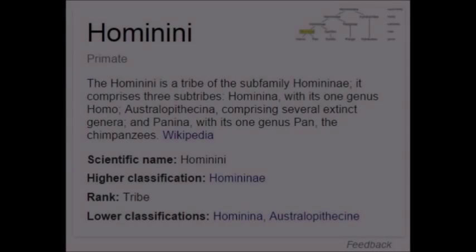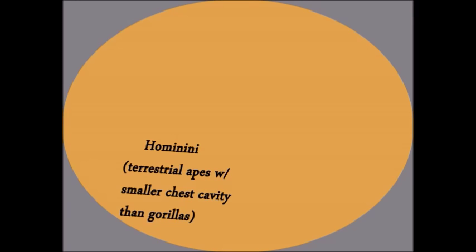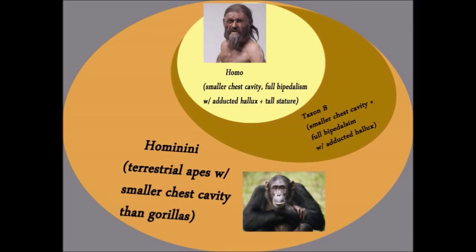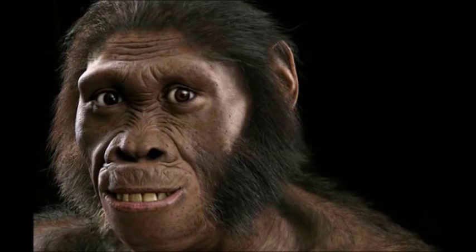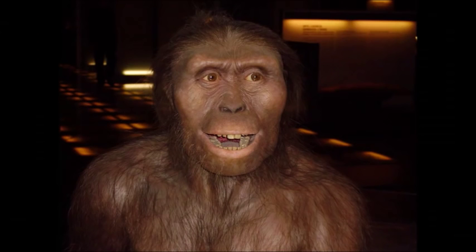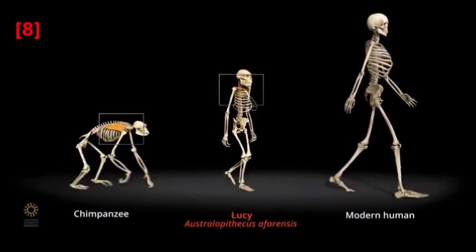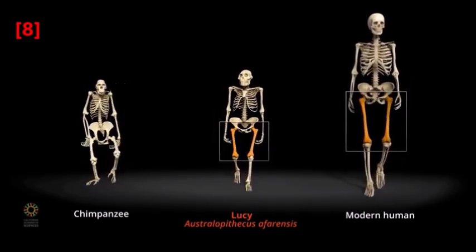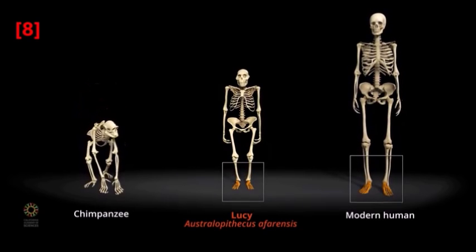Let's try another example, one a little closer to home. Suppose we wanted to find a transitional between humans and other apes in the hominini tribe. We can define Hominini as taxon A, with trait A being terrestrial apes with a more slender chest cavity than gorillas — humans and chimps clearly fit here. What makes humans unique from chimps? We can define taxon C as Homo, with traits B and C as obligate bipedalism with an adducted hallux and tall stature respectively. So a cladistic transitional, if it exists, ought to have chimp-like proportions yet be obligately bipedal with adducted halluxes, like humans. We can tell that Australopithecus was bipedal because the hole through which the vertebral column attaches is closer to the bottom position as in humans than to the backwards position in quadrupedal chimpanzees, and the pelvis is closer in proportion to ours than to chimpanzees'.